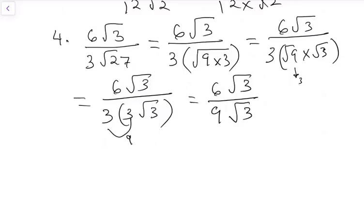We have 6 root 3 over 9 root 3 because 3 times 3 gives us 9. From here, we can carefully see that root 3 and root 3 cancel out. We are left with 6 over 9. With 6 over 9, 3 will go in 6 twice and 3 will go in 9 three times. Our final answer will be 2 over 3.